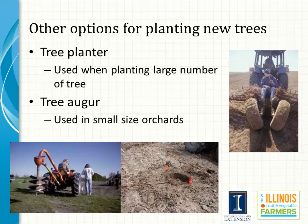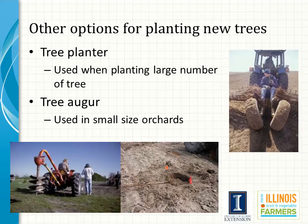Most large commercial growers utilize a tree planter, which is probably the easiest method to plant trees. There are two major checkpoints in this system. One, make sure the union is set at the proper height — this is usually accomplished by having someone go behind the planter and pull up or push down the tree. Two, make sure the tree roots do not dry out. Carry only enough trees so that when you plant the last tree, the roots still have some moisture.